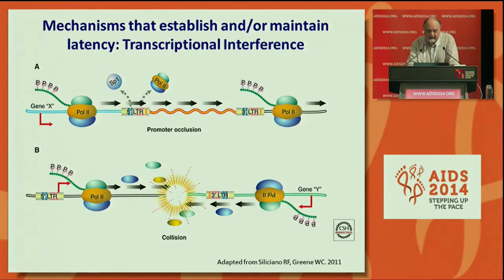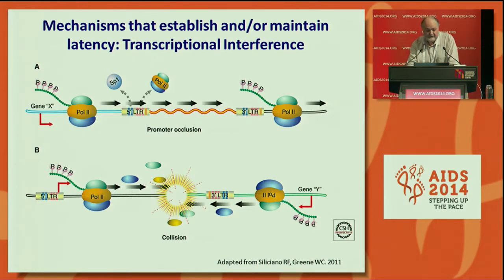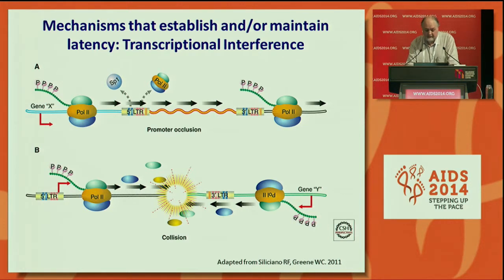Similarly, if you have the HIV genes in opposite orientation to the cellular gene, you can still get a mechanism of a collision of the two Pol IIs and, again, prevention of transcription.